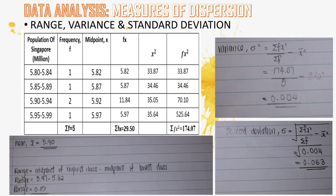We also find the range, variance, and standard deviation for Singapore. The range is the midpoint of the higher class minus the midpoint of the lower class, which equals 0.15. The variance is calculated as the sum of fx squared divided by sum of frequency minus mean squared, giving 0.004. The standard deviation is the square root of the variance, which is 0.063.